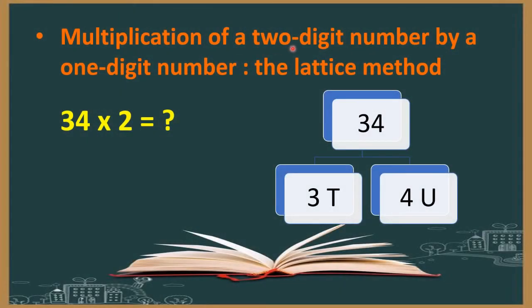And this is multiplication of a 2-digit number by a 1-digit number — the lattice method. 34 into 2. So here we must multiply 34 by 2. Now I will tell you a trick: we are going to split 34 into a convenient part, that is 30 and 4 — that is 3 tens and 4 units.